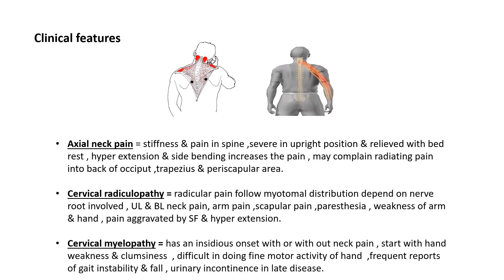The third category is cervical myelopathy, which has an insidious onset with or without neck pain. Patients first complain of weakness and clumsiness of the hand, then difficulty in performing fine motor activities such as buttoning, pincer grasp, or holding objects. Patients also frequently complain of gait instability and falls, and in some cases urinary incontinence is seen.